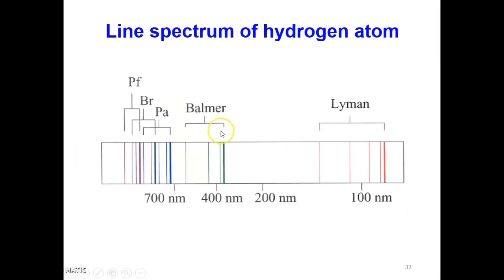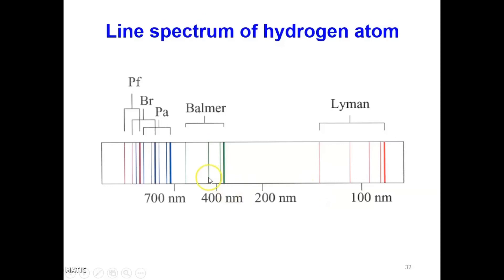This diagram shows all 5 series of the emission series of hydrogen line spectrum. For example, the Lyman series and its lines are shown, with each series having a specific wavelength value. The Balmer series and its first line are also indicated. You can see that each series has its own wavelength value.